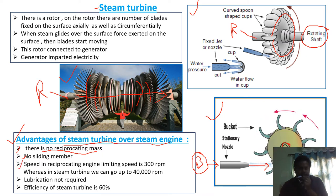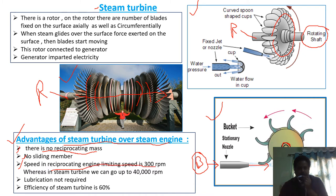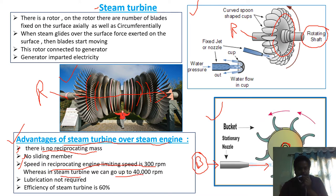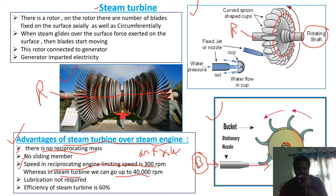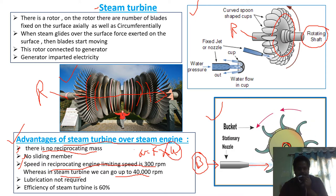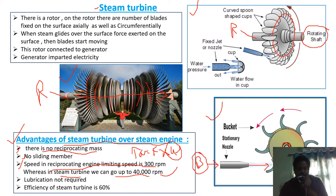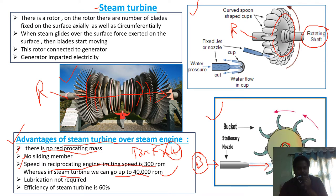The important thing is the reciprocating engine speed limit is 300 RPM, but in the case of a steam turbine we can go up to 40,000 RPM. As we know, work equals F times U, where U is the velocity of the blade. Once the velocity increases, the work output will be increased, so the steam turbine running at around 40,000 RPM gives very high work output.